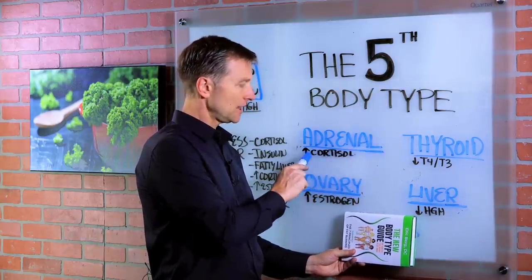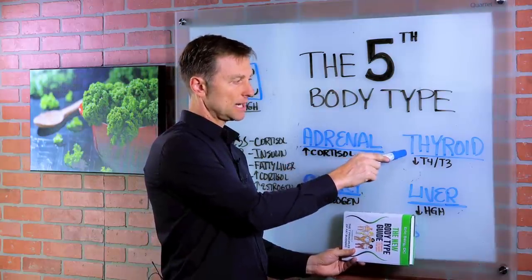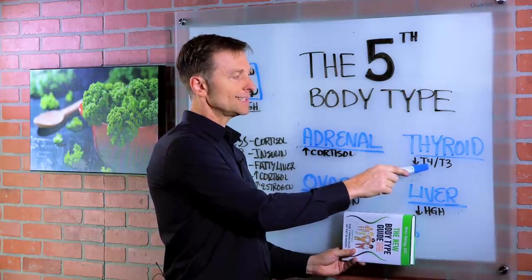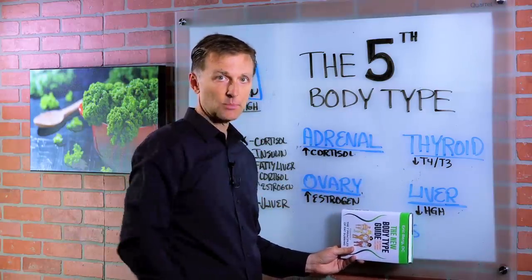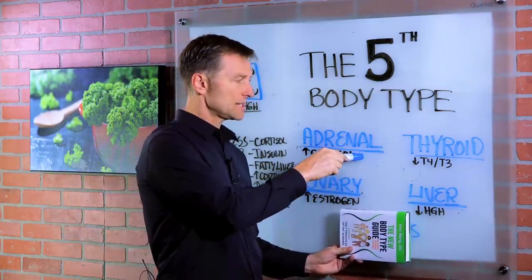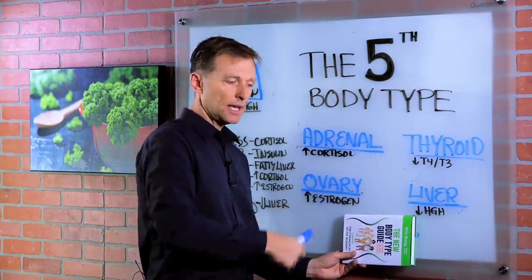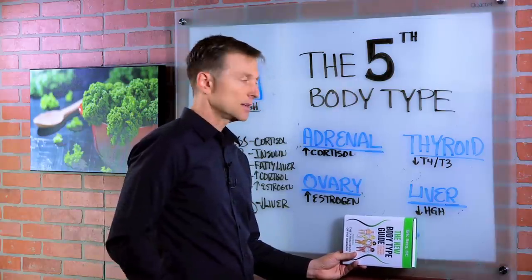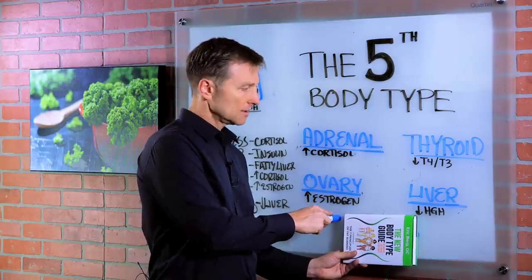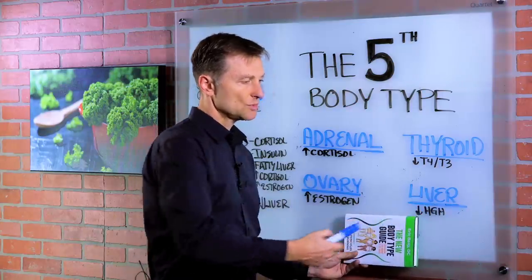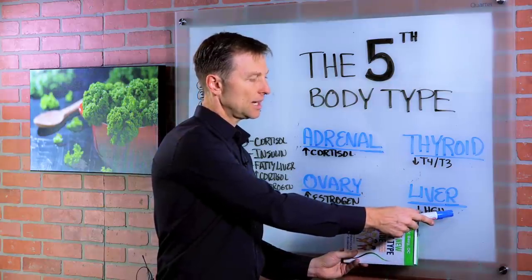You have the adrenal, which is high levels of cortisol — that's a stress hormone. You have the thyroid body type, which is low levels of the thyroid hormone T4 or T3 — that gives an overall weight gain in the entire body, more of a sagging belly. Then we have the ovary type — that's like a pear shape, heavier around the hips, the thighs, the lower butt — that is high levels of estrogen. Then we have the liver, which is more of a protruding basketball belly. That is liver damage.